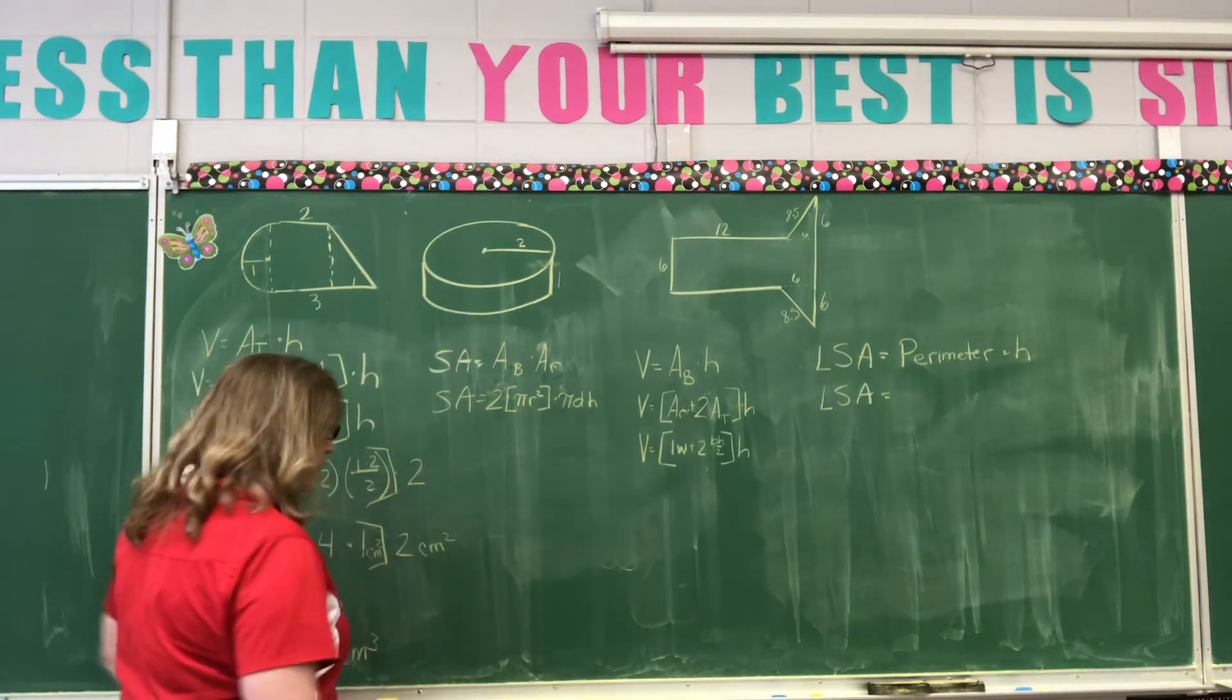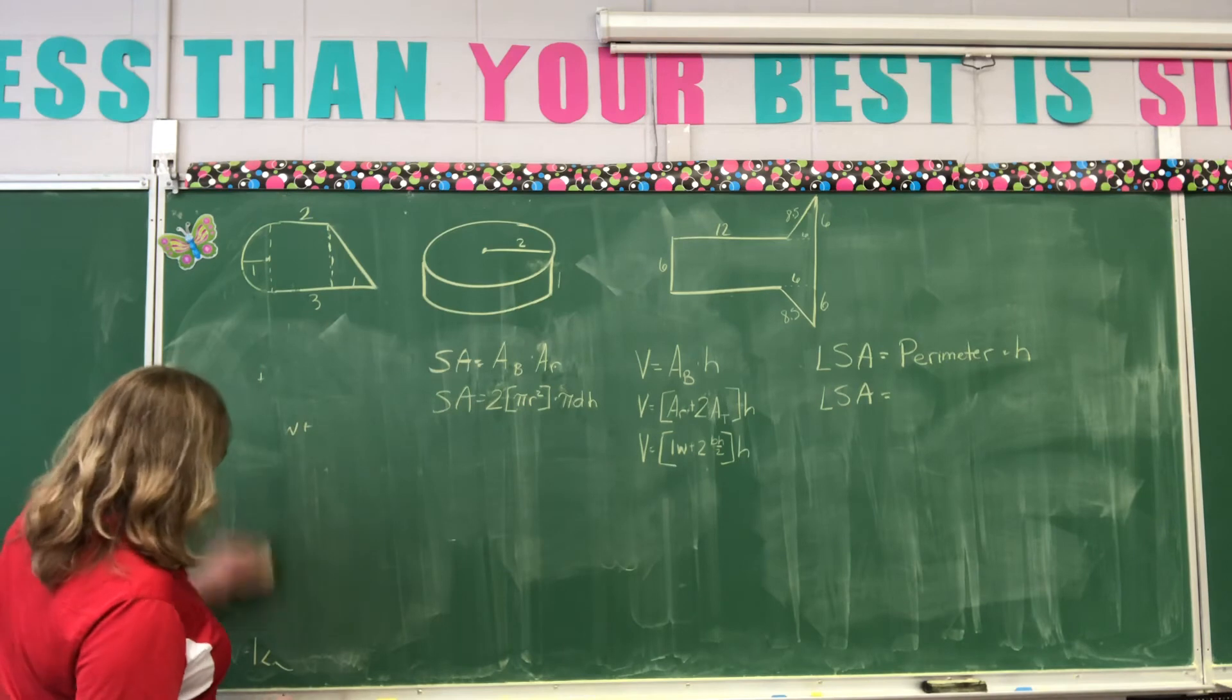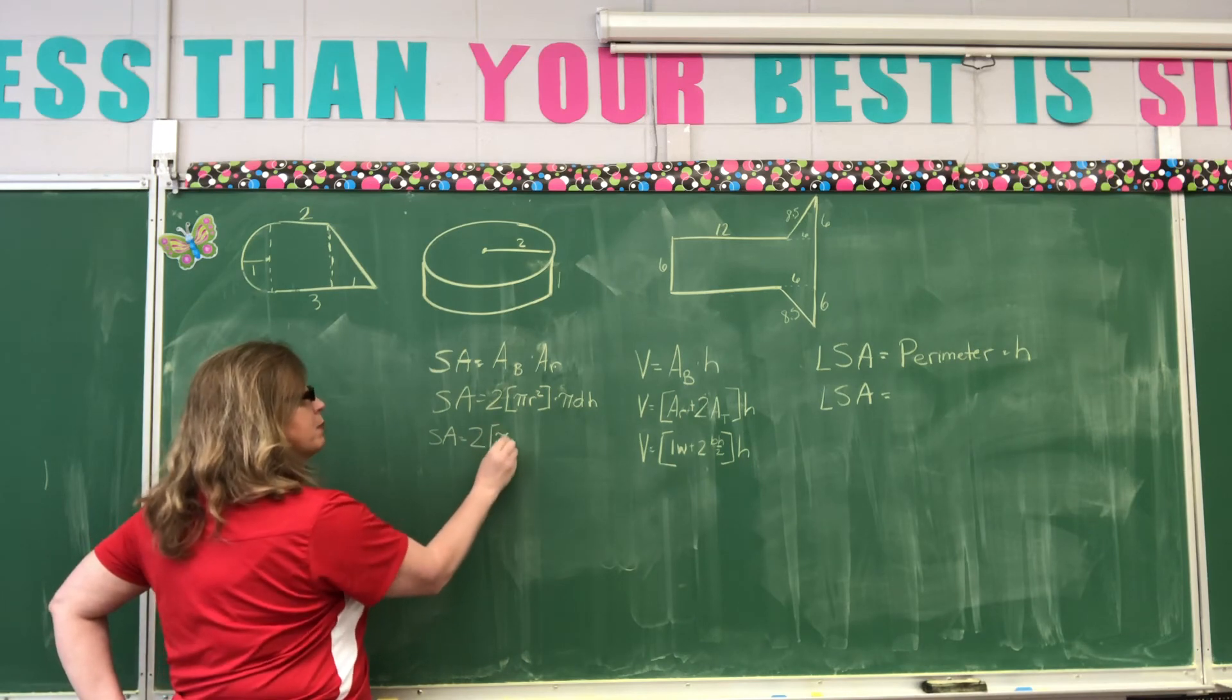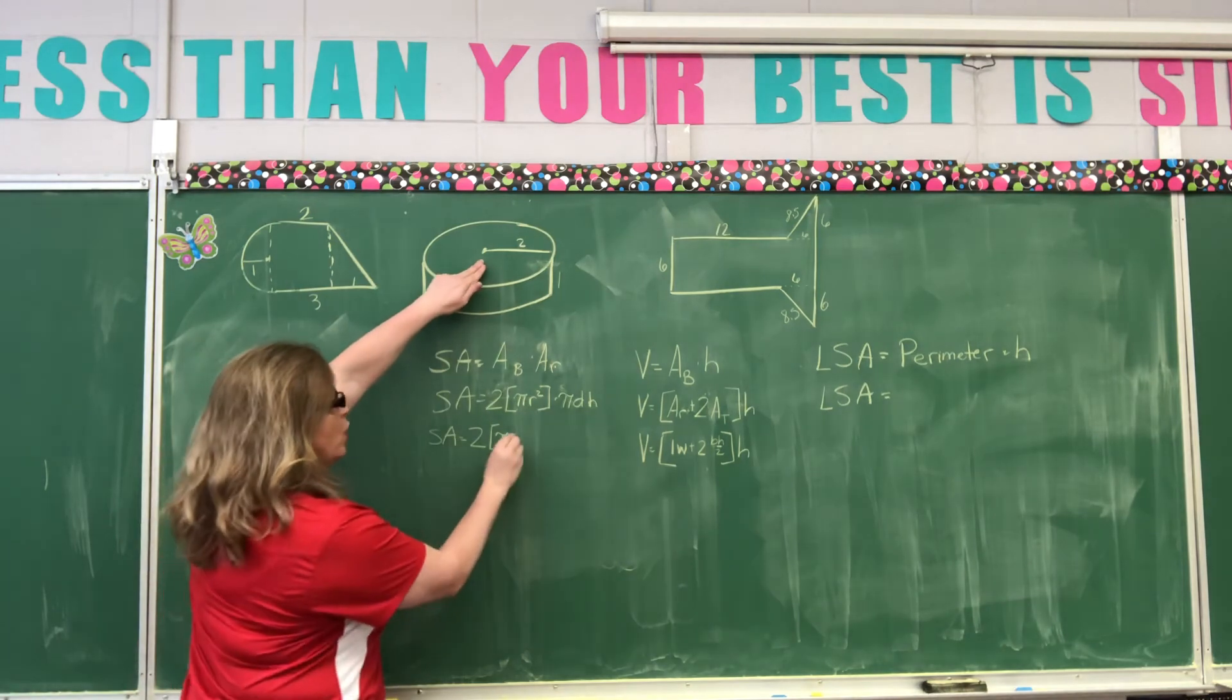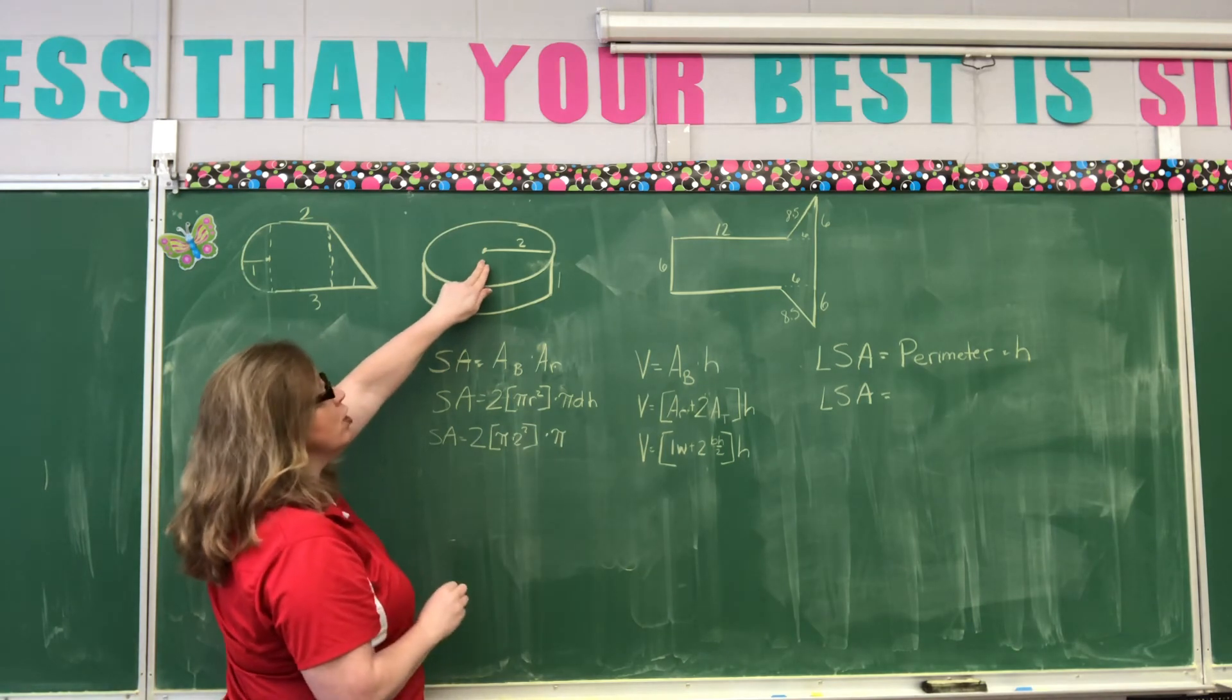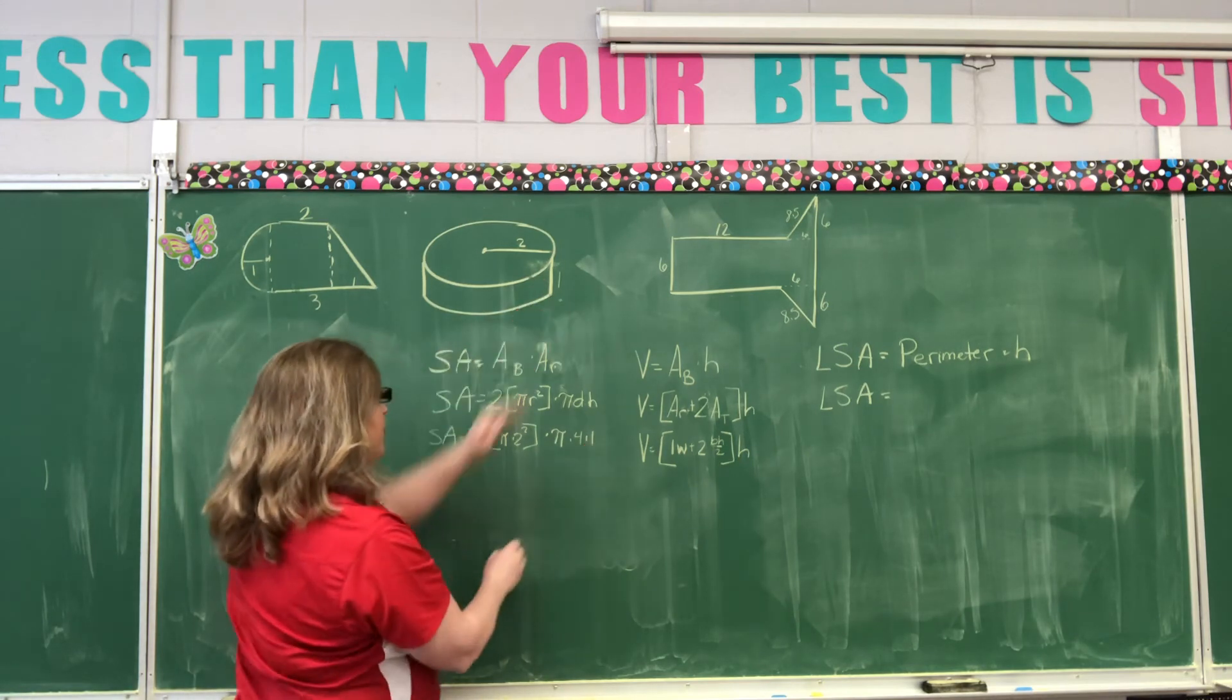Now, we're going to go through this. So, for our surface area, we have the surface area equals 2 times pi times radius squared. Well, the radius is 2. So, we're going to say 2 squared here. Times pi times the diameter. The diameter of this is going to be 4. The height is going to be 1. So, now I'm going to say 2 squared is 4. So, now I have 2 times pi times 4.